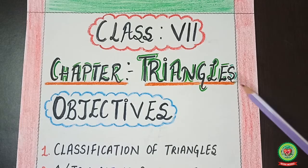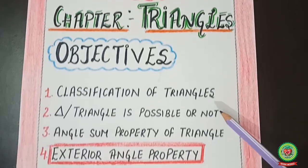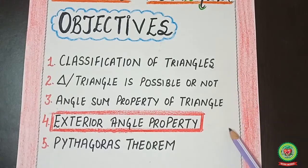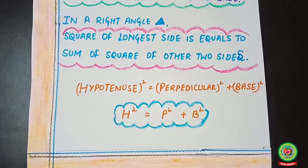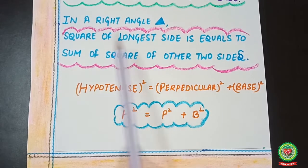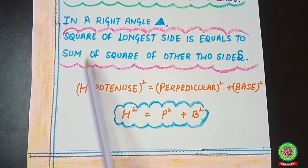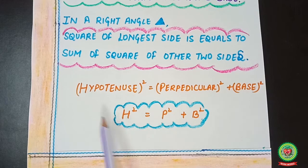Dear students, in this chapter on triangles, we have already discussed the first four objectives. In the last video we discussed the Pythagoras theorem and did some related questions. Today we will do more questions using the Pythagoras theorem. First, let's recall: in a right angle triangle, the square of the longest side equals the sum of the squares of the other two sides — that is, hypotenuse² = perpendicular² + base².